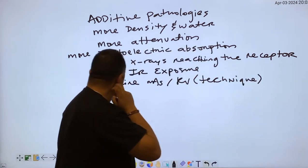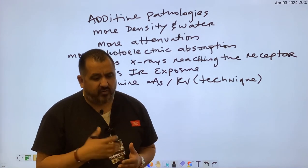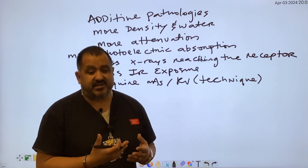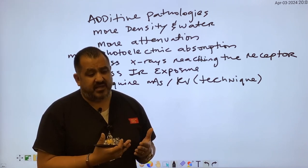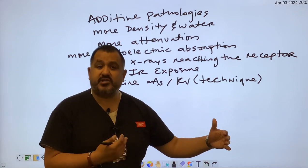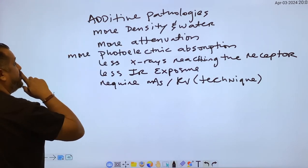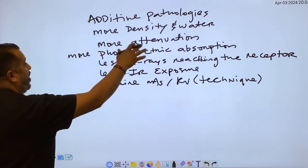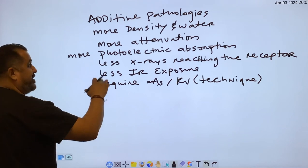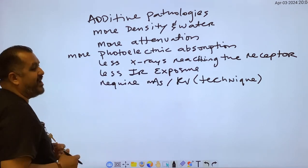If you use more technique, it's usually about two to four KV that we go up. If you want to use more mAs, it has to be about 25 to 30% to see a considerable change in the recorded exposure. So additive pathologies — more density or more water — there's more attenuation, more photoelectric absorption, less x-rays reaching the receptor, less IR exposure, requiring more technique.